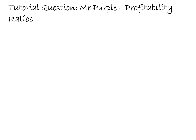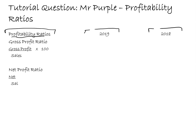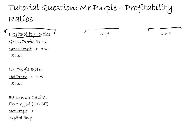To set it up I'm going to have three columns: one for the ratios themselves, one for the 2019 figures, and one for the 2018 figures. The gross profit ratio is gross profit divided by sales multiplied by 100. The net profit ratio is net profit divided by sales multiplied by 100. The return on capital employed (ROCE) is net profit divided by capital employed multiplied by 100.